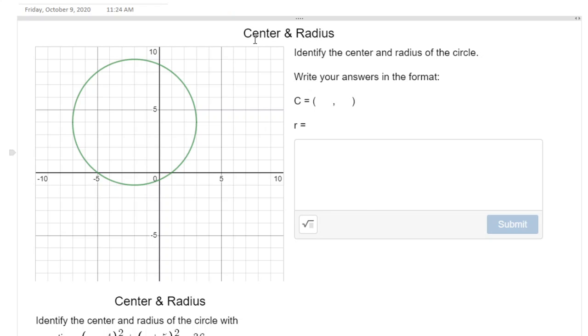Hey guys, so the first question on Desmos asks you to identify the center and radius of the circle. Here's how you do it, or at least here's how I do it. I find the highest point on my circle and the lowest point on my circle.